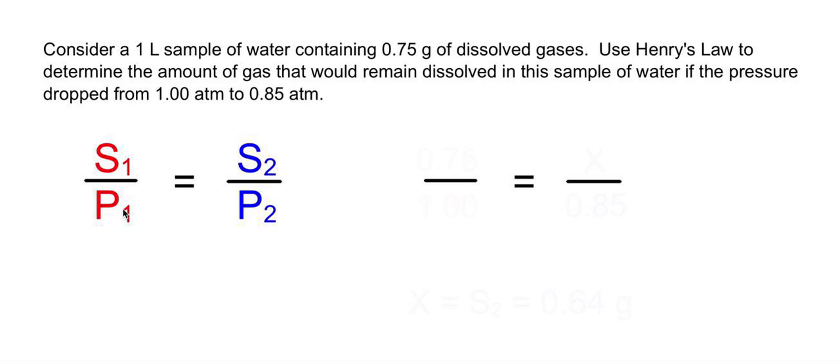S1/P1 represents the solubility and pressure of the original sample. The original sample contained 0.75 grams, so let's put that in the top left spot - 0.75 grams of dissolved gases. That number is associated with a pressure of 1.0 atm. It dropped from 1.0 to 0.85, so it must have started at 1.0.